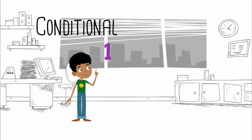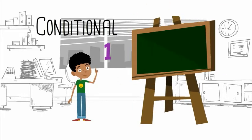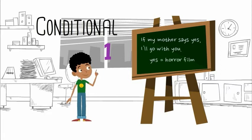Conditional one. What does it do? Gemma wants to go to the cinema with Ben and his brother, but her mother has to say yes first. If yes, then horror film. How does Gemma say this? She uses the simple present, says, and will future, will go.